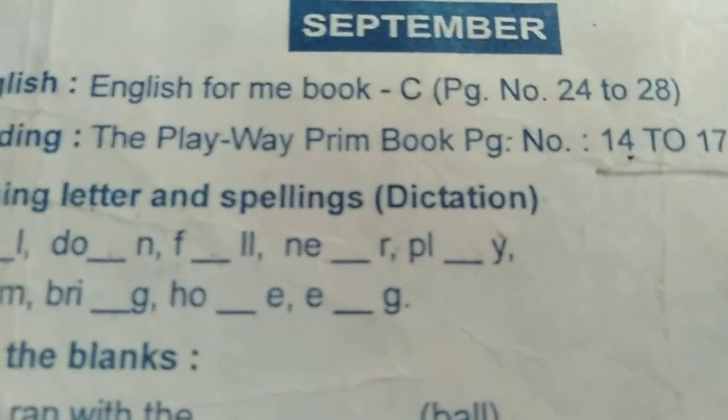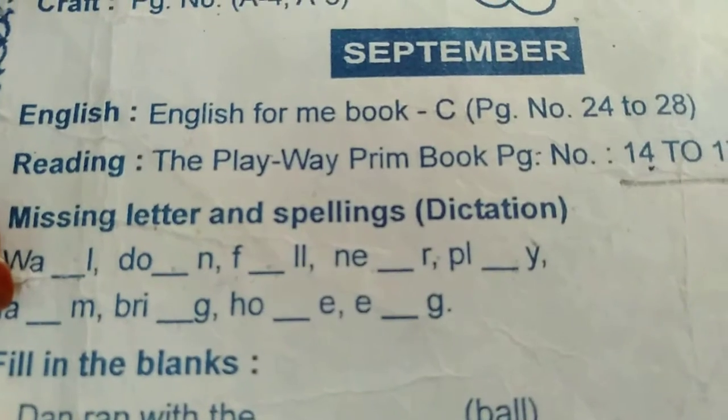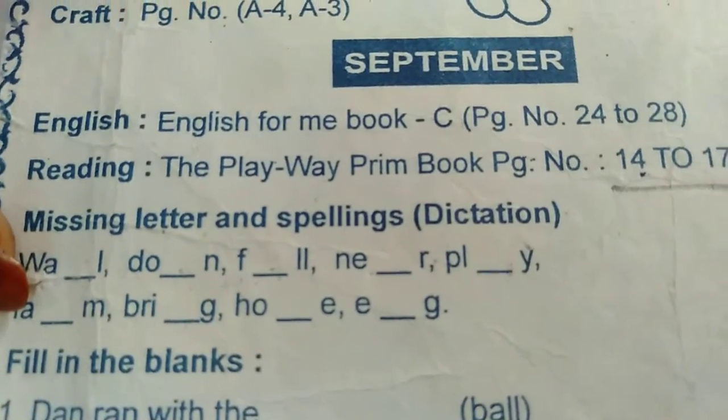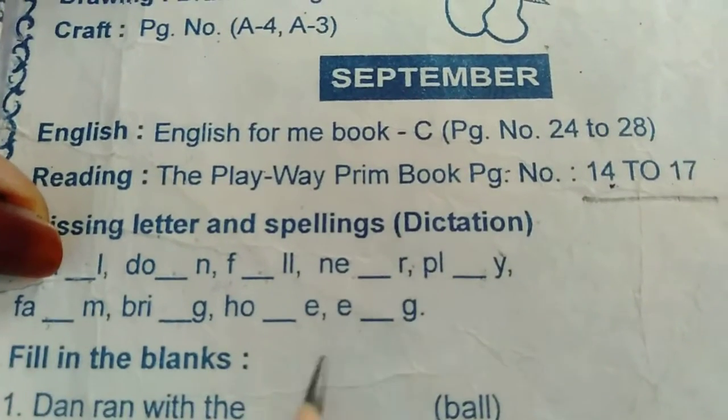In English, previous video we have write 5 missing letters. So today we write next 4 missing letters. Previous video mein humne 5 missing letters kiye the, jo lesson number 6 ke the. Ab aaj hum 4 missing letters karenge, jo lesson number 7 mein se hai.